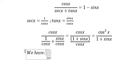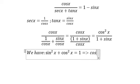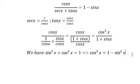We have cosine x squared equals 1 minus sine x squared, so we will change cosine x squared into 1 minus sine x squared in here.